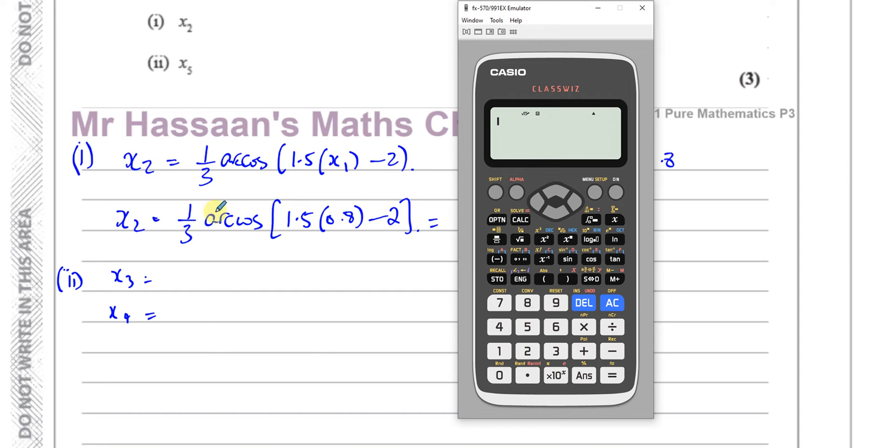So that's our answer inside the calculator. Now, I'm going to set up this, you know, in my calculator. So I'll have 1 over 3. It's like my fraction, 1 over 3. I'm going to have arc cosine, which means inverse cosine of, and I have 1.5. And I'm going to not put 0.8, I'm going to put answer. So it's 1.5 times my answer. Okay, and minus 2. Close the bracket. And that should give me x2. Okay, so that's x2.